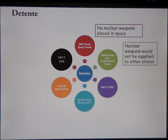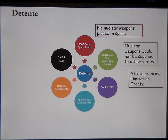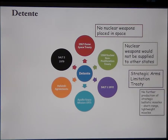The first set of talks you need to be aware of are SALT I, signed in 1972. It stands for Strategic Arms Limitation Treaty and is the result of three years' worth of talks. It seems the first step in a long journey toward very positive goals about limiting nuclear weapons. They agree that there's going to be no further production of strategic ballistic missiles — short-range lightweight missiles.